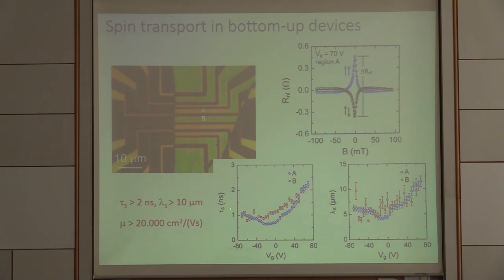You see now that on these devices, if you go far away from the charge neutrality point, we can get spin lifetimes exceeding 2 nanoseconds. And we can also get spin diffusion lengths exceeding 10 micrometers on these devices. The carrier mobility which we extracted at room temperature was slightly exceeding 20,000. But you also see A is the suspended, B is non suspended, and if you look at these graphs, there is no big difference. So I think this is an indication that even in these devices, we are still limited by the interfaces.